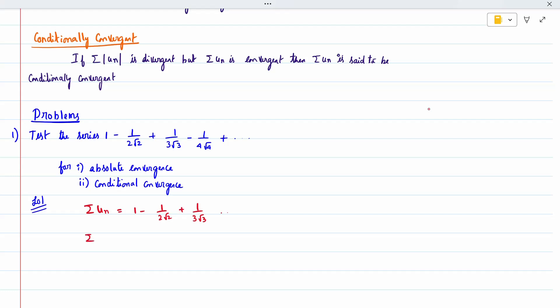When we take |uₙ|, all terms become positive with no negatives. First, we need to prove absolute convergence by checking whether the sum of |uₙ| is convergent. For conditional convergence, we would need the sum of uₙ to converge.